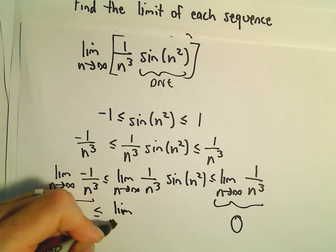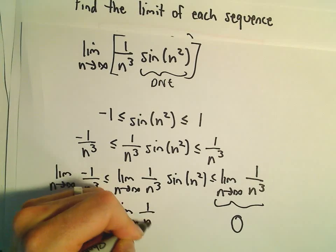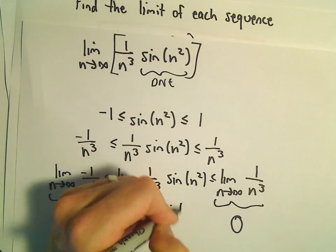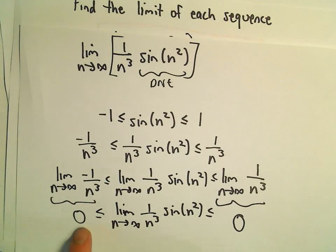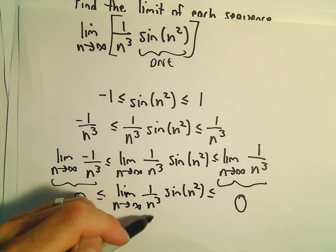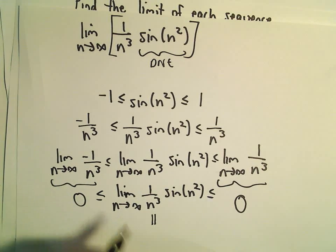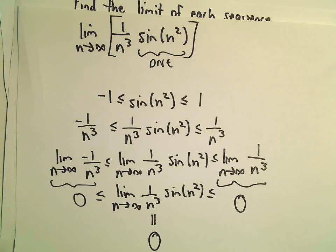We've now shown that the limit as n goes to infinity of 1 over n cubed sine of n squared is less than or equal to 0 and greater than or equal to 0. So that implies that our original limit must also equal 0, using the squeeze theorem.